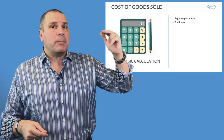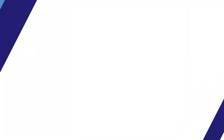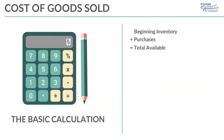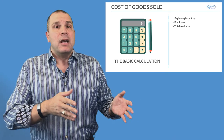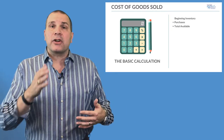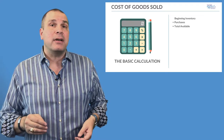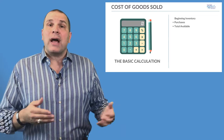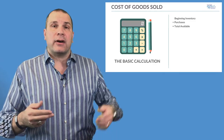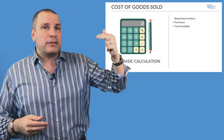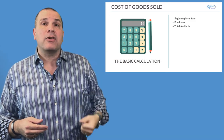Beginning inventory plus purchases, whether paid for or not, gives me a total — how much money I have on my shelves that I could sell. That also means that if I had $5,000 on the shelves when I opened my restaurant, brought a delivery in of $10,000, and closed the restaurant, I'd have $15,000 I could sell. Beginning inventory plus purchases gives me total available.